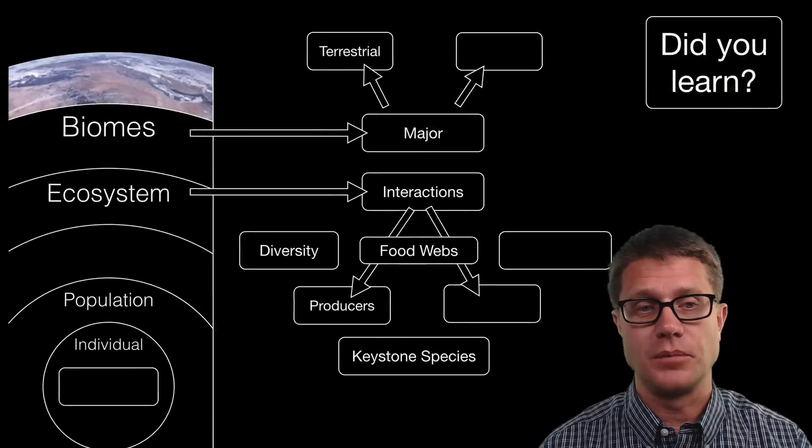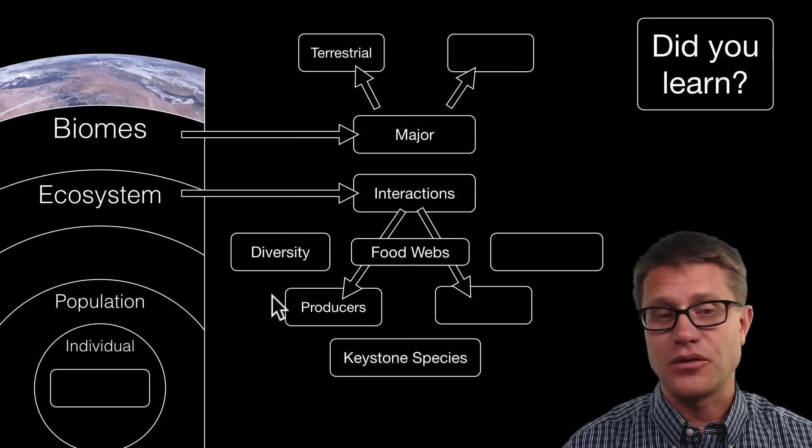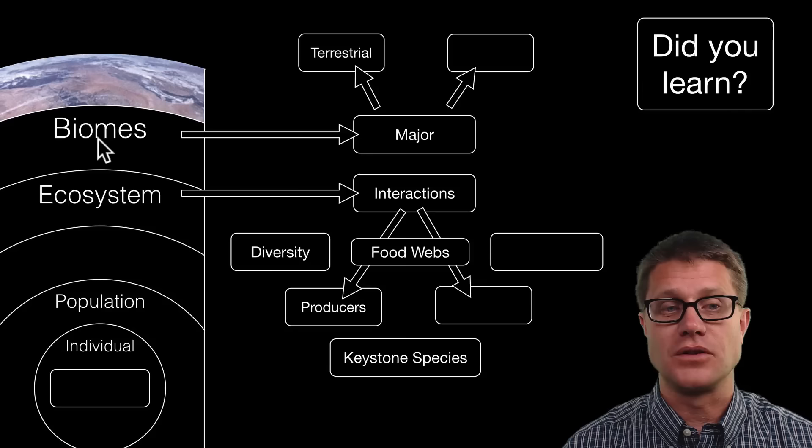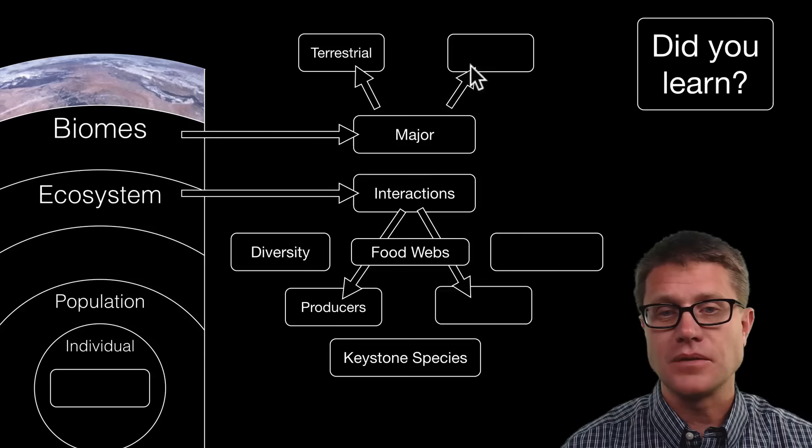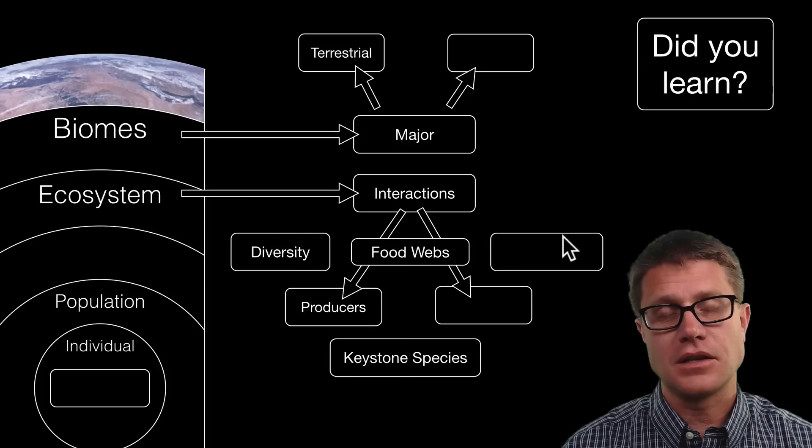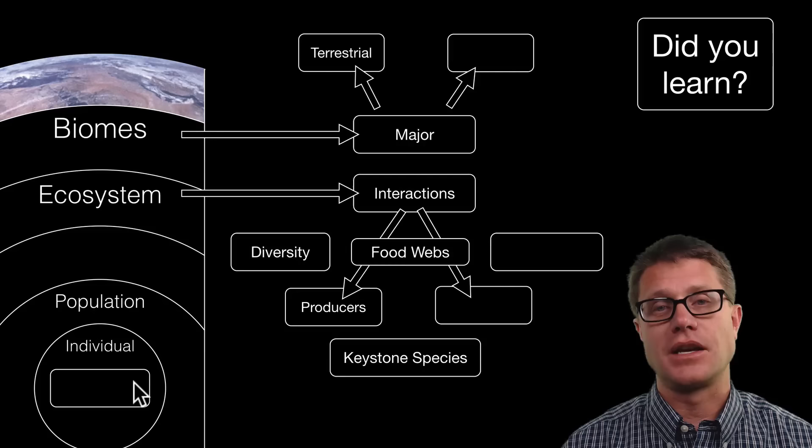So did you learn the following? Can you pause the video now and fill in the blanks? Well I hope so. It goes from individual to population to community, ecosystem, biome. Major examples are terrestrial and aquatic. Could you list some of those? We have got interactions between producers and consumers. Keystone species diversity and then the edge effect can affect the health of the ecosystem. And then remember the niche is the role of an individual. It is kind of like its job. I hope you learned that and I hope that was helpful.